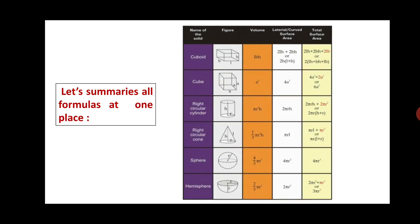Here you can see 3-dimensional figures. Cuboid: whose volume is length × breadth × height. Its lateral surface area is 2H(L + B), and its total surface area is 2(LH + BH + LB). Next is cube, whose side is A: volume is A³, lateral surface area is 4A², and total surface area is 6A². Then right circular cylinder: volume is πR²H, curved surface area is 2πRH, and total surface area is 2πR(H + R).